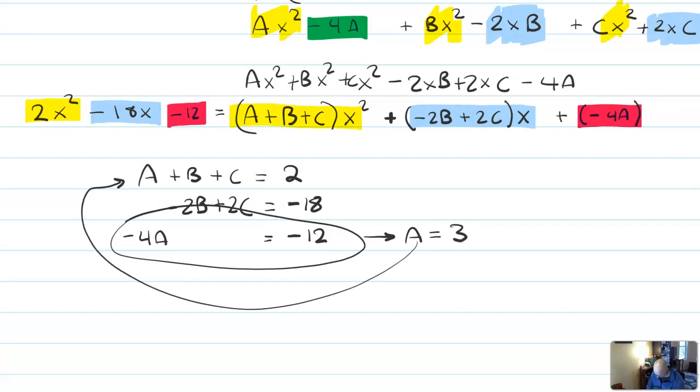because I can immediately find that a is 3. And bringing that value in here, if that's 3, then I could take away 3 from both sides and get that b plus c is equal to negative 1.